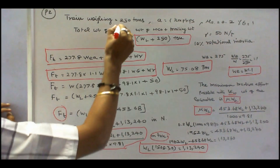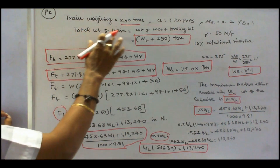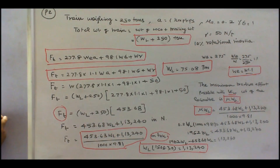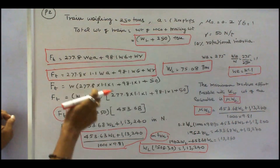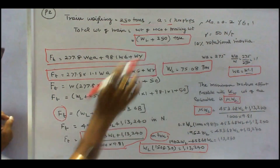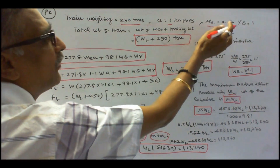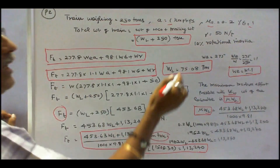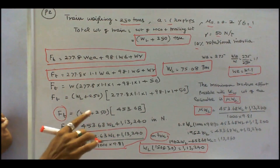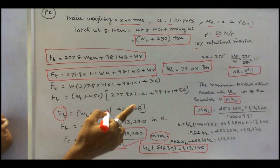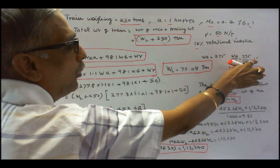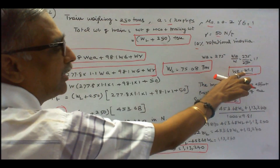In this problem, the train weighing 250 tons means total weight of train equals weight of locomotive plus trailing weight, where trailing weight is 250 tons. So total weight equals W suffix L plus 250 tons. Acceleration is given as 1 km per hour per second, coefficient of aggregation is 0.2, percentage gradient is 1, trailing resistance is 50 N per ton, and rotational inertia is 10%. Therefore accelerating weight equals dead weight plus 10% of dead weight, giving accelerating weight divided by dead weight equal to 1.1, so accelerating weight equals W into 1.1.